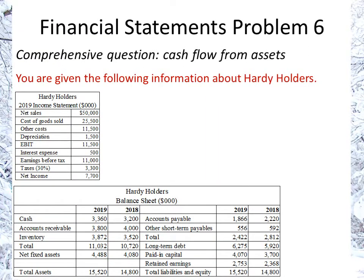Financial statements problem six. This is going to be a comprehensive question that leads us to cash flow from assets. You're given the following information about Hardy Holders — a 2019 income statement and balance sheet.